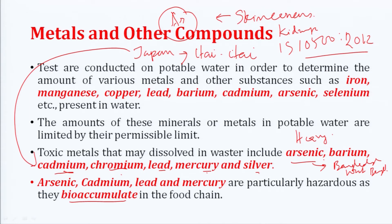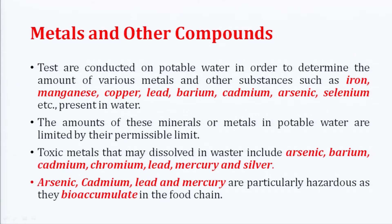Arsenic, cadmium, lead, and mercury are particularly hazardous as they bioaccumulate in the food chain. Bioaccumulation is a very important term when we talk about food chains. Bioaccumulation means that when you eat or drink something, generally the waste goes through your body secretions — through sweat, excreta, feces, or urine. But these metals are going to remain in your body. Once they enter the body, they stay there and accumulate over time and through the food chain.